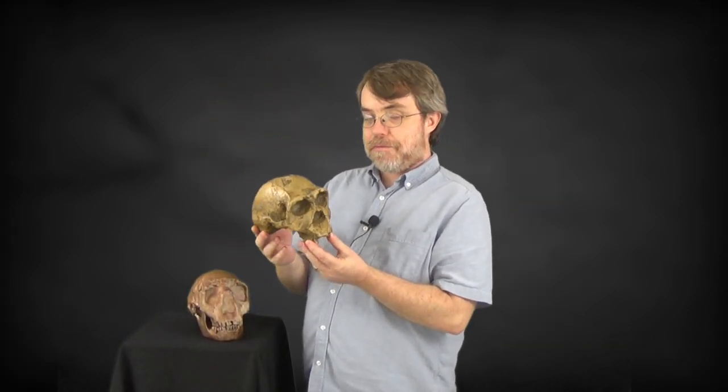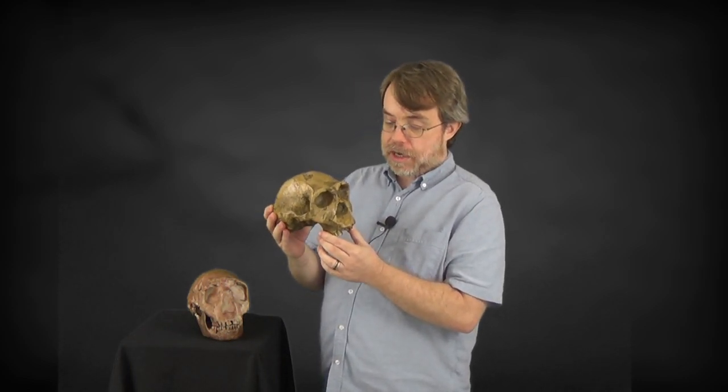Now the discovery of Nariokotome boy confirmed the presence of something like Homo erectus in East Africa. So this is a model of a fossil found on the east side of Lake Turkana, this is 3733, and it was associated with the name Homo erectus when it was discovered. And the discovery of the similar Nariokotome boy confirmed, presumably, that these are in fact all one species living there in East Africa.